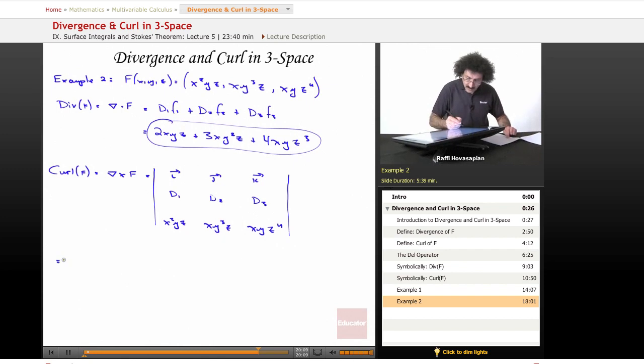Okay, so now let's go ahead and expand along the first row. It's going to be the derivative with respect to y of this minus the derivative with respect to z of this. The derivative with respect to y of this is x z to the fourth. The derivative with respect to z of this is x y cubed. This is the i component.